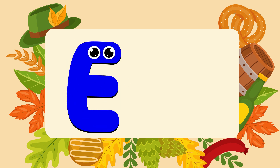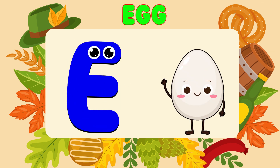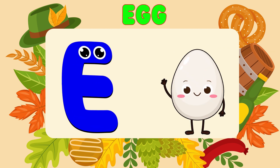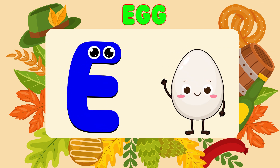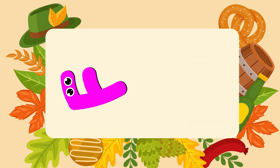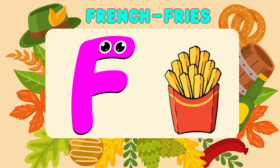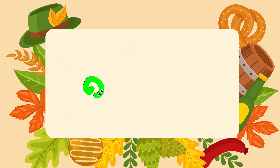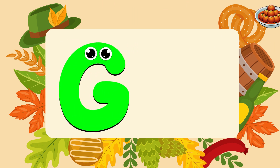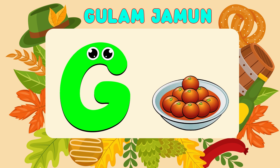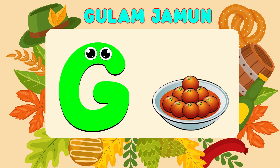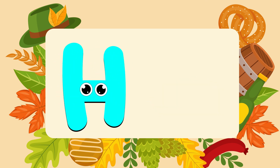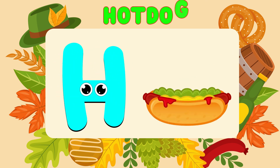E is for Egg. E, E, Egg. F is for French Fries. F, F, French Fries. G is for Gulab Jammin. G, G, Gulab Jammin. H is for Hot Dog. H, H, Hot Dog.